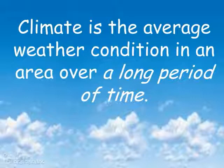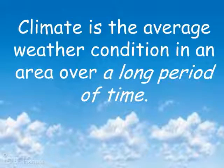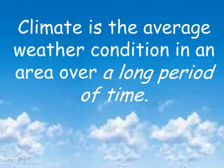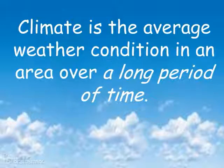We're going to first start talking about climate. When we say climate, we mean the average weather condition in an area over a long period of time. This long period of time is usually a year — they look at the weather of a certain place and average it all together. Climate is pretty consistent, whereas weather changes on a daily basis.